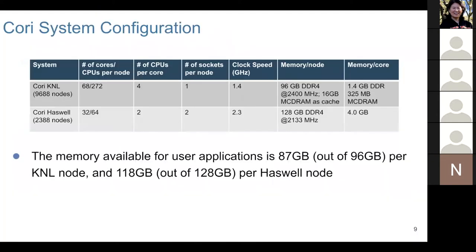Now let's talk about how to run VASP. We have two different processors on Cori: KNL and Haswell. The Cori KNL partition is much larger in node count. One thing to realize is the memory available for user applications is not the full node memory. On KNL only 87 gigabytes out of 96 gigabytes is available to your application, and for Haswell we have 118 gigabytes.